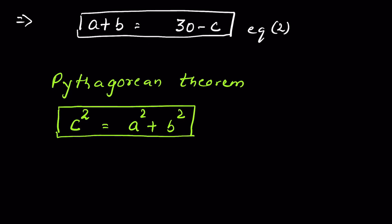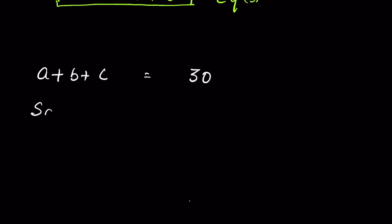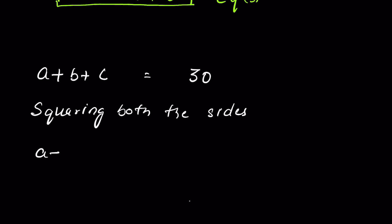Now we have a plus b plus c is equal to 30. Let's square both the sides. Squaring both sides: a plus b plus c whole square is equal to 30 squared, which is 900.